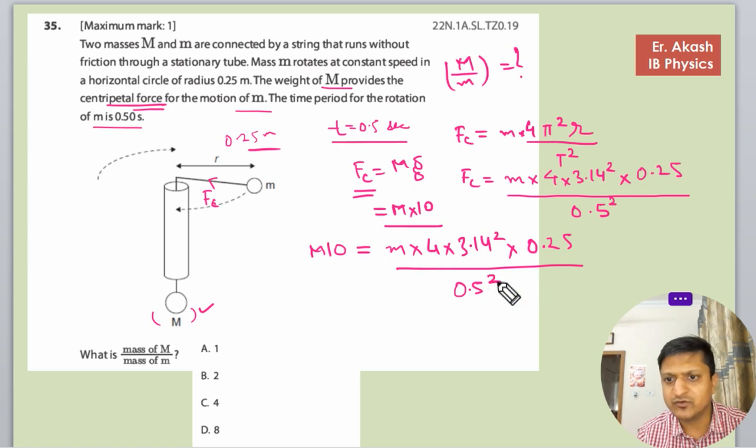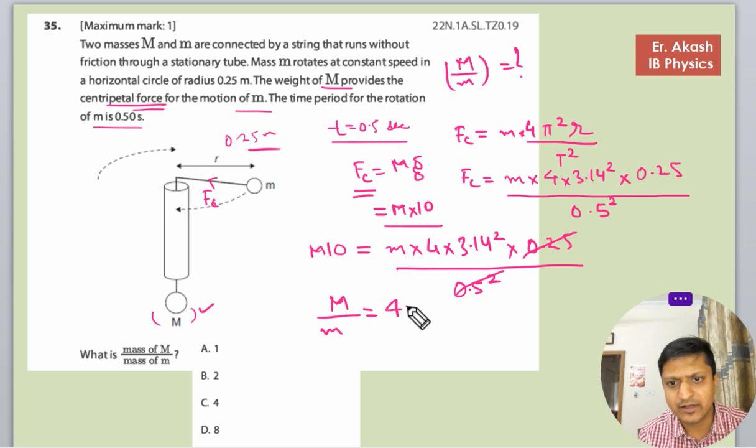0.5 whole square is 0.25, so this cancels off. Capital M upon m equals—you can do the calculation at your end in your free time—to 10.